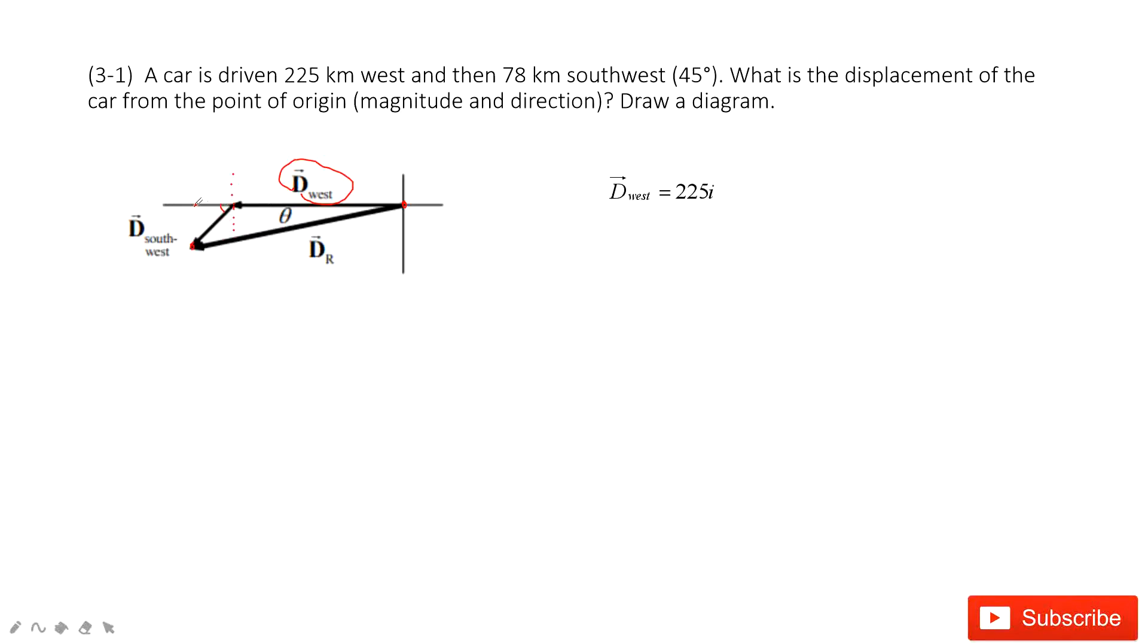We can consider this one the displacement west. So we consider this component is i, this one is j. So as this one, it has the component 225i.